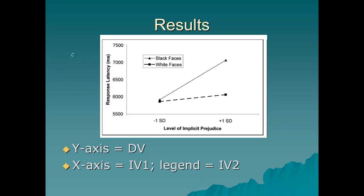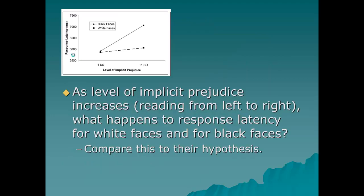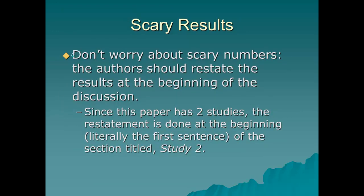If you have two independent variables, there'll be a legend box on your graph. We have two independent variables: level of prejudice, and race. In that legend box you'll see the different levels of the second independent variable — black faces and white faces — and it tells you which line corresponds to which. As the level of implicit prejudice increases, reading from left to right, what happens to the response latency for white faces and for black faces? Try to come up with a verbal summary of the graph and compare it to their hypothesis. That's really all I want you to take from the results section for the first study.